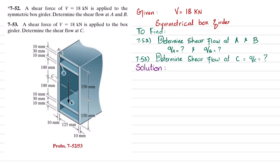Let's start with the solution. We know that shear flow is generally equal to V times Q divided by I. First, we will find the section property I for this box girder.